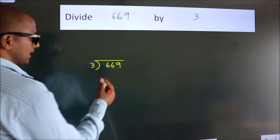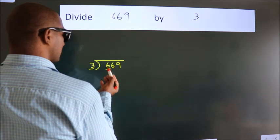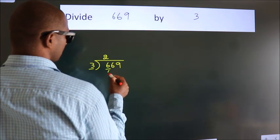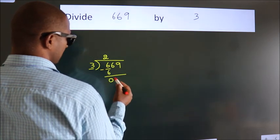Next, here we have 6, here 3. When do we get 6? In the 3 table, 3 times 2 is 6. Now we should subtract, we get 0.